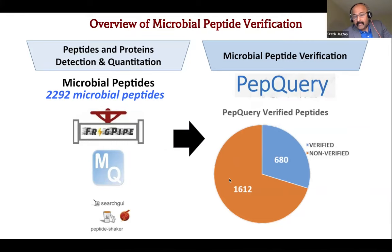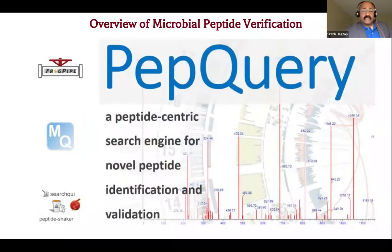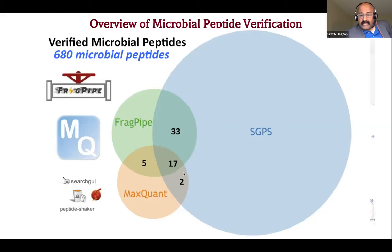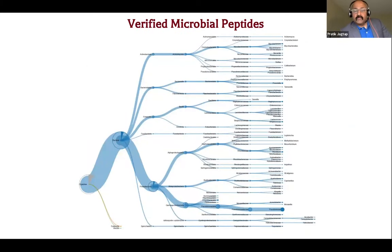Out of the 2,292 microbial peptides, we found 680 of these peptides had pretty good evidence that they were indeed present in the sample. Using PepQuery, which is agnostic to any search algorithm, it basically looks at the peptide and tries to find the evidence for its presence in the sample. We ended up getting fewer but more confident peptides — those detected in two or three of the search algorithms. Using multiple search algorithms, PepQuery, and eventually Unipept for taxonomic and functional analysis, we could bring it down to a list of verified microbial peptides, which still gave us a pretty complex taxonomic tree.